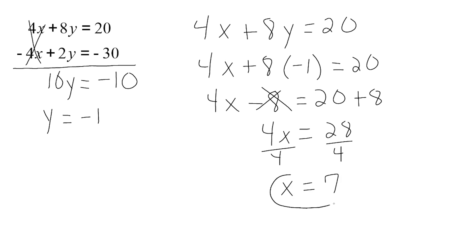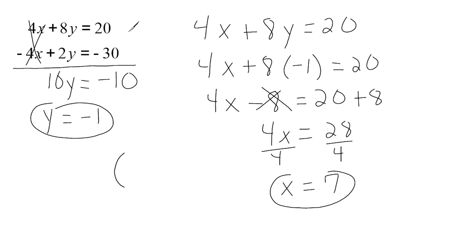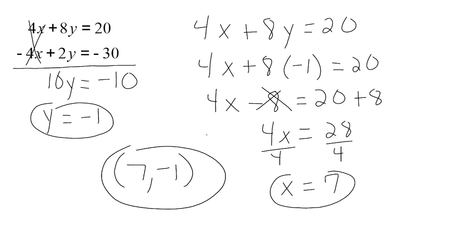So x is 7 and y is negative 1. With a system of equations we should write our answer as an ordered pair, because each equation represents a straight line on the coordinate plane. These two lines intersect precisely at the point positive 7, negative 1, which is our answer to the system. Let's go ahead and do another example.